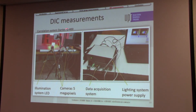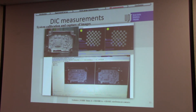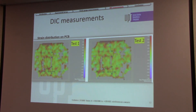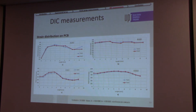The Digital Image Correlation setup was done with Dantec Q400. The PCB surface was prepared with a random speckle pattern and the system was calibrated before image acquisition. After correlation, the results show the full strain distribution across the PCB surface. Values were extracted from the same areas where the strain gauges were placed, enabling a direct comparison with the strain gauge measurements.